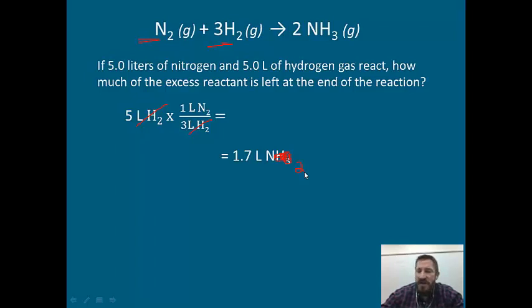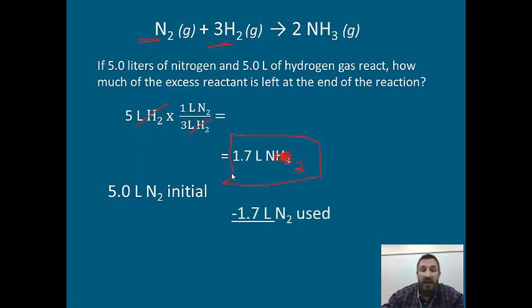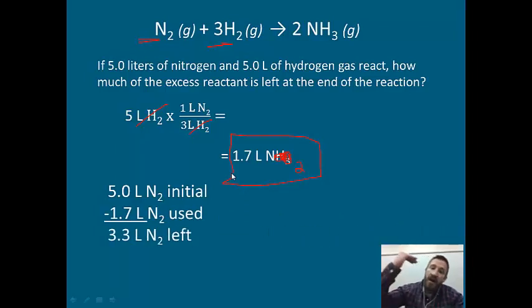So what does this mean? Well, first of all, we said we had 5 liters of nitrogen initially. And then we just determined from this that we used 1.7 liters of nitrogen. That's how much was used. So what we're going to do is subtract that from the initial amount. So we say 5 minus 1.7 liters of nitrogen used, and then, we've got 3 liters of nitrogen left. That's it.